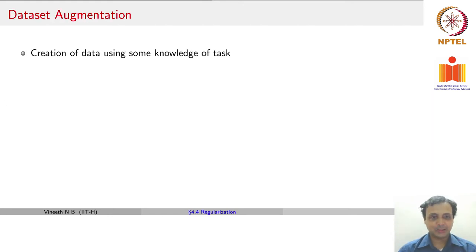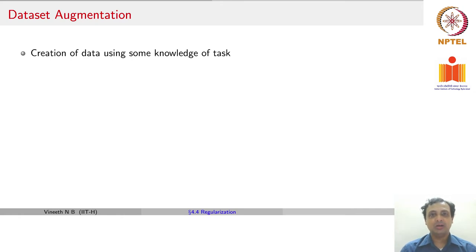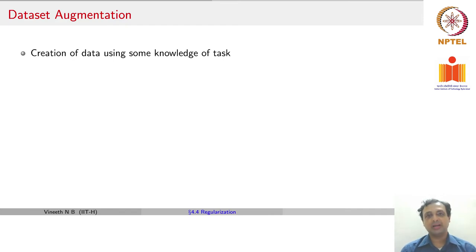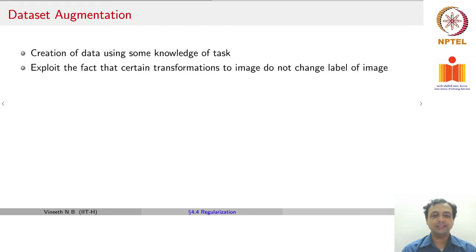Another regularization method is dataset augmentation, where in addition to your training data, you add more data through transformations on your original data. This exposes your neural network to data beyond the training data and hence gives you better generalization performance. Let us see how you go about augmenting your data in other ways.